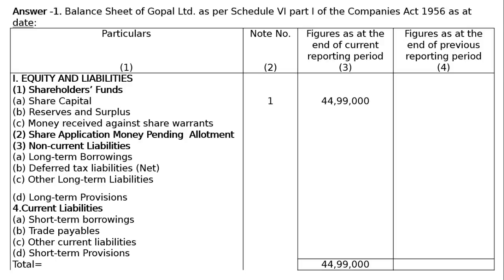Then comes B - reserves and surplus, C - money received against share warrants. Then second point: share application money pending allotment — the application money we have received but we have not allotted the shares, it is pending. Then third: non-current liabilities, meaning long-term borrowings. B part - deferred tax liability, income tax demand received by us but not paid. C - other long-term liabilities. D - long-term provisions.